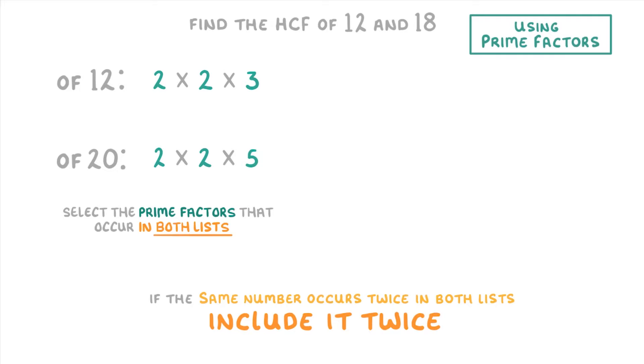This time, the prime factors that appear in both lists are these 2's and these 2's. So, we're going to have to multiply 2 times 2 together to get 4 as our highest common factor.